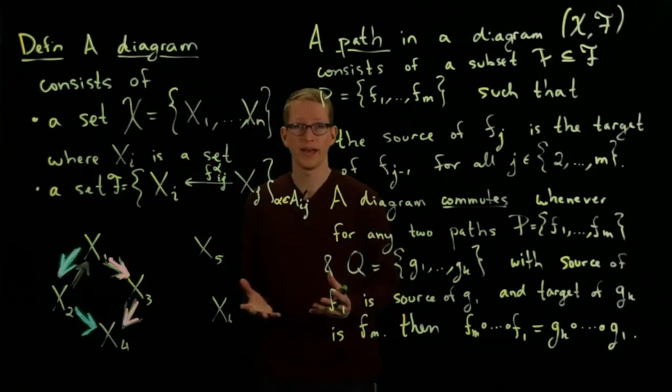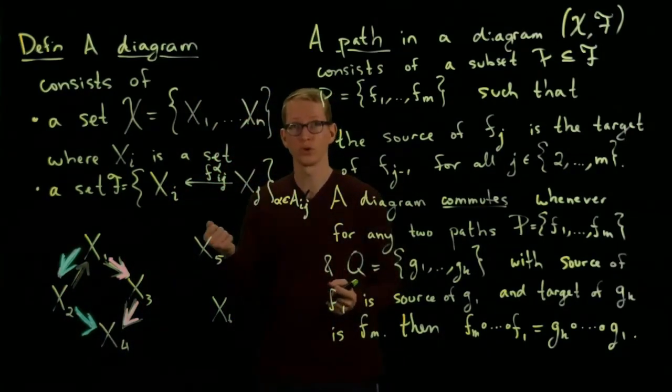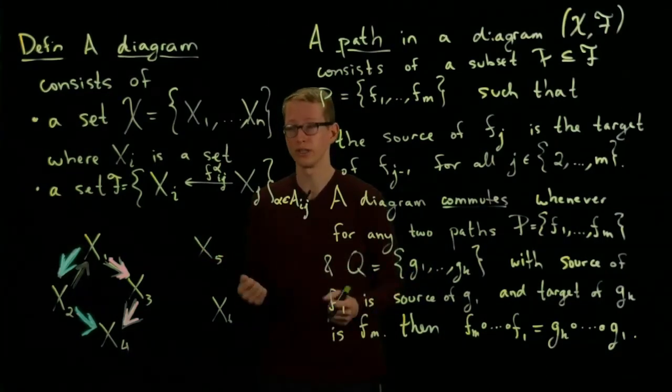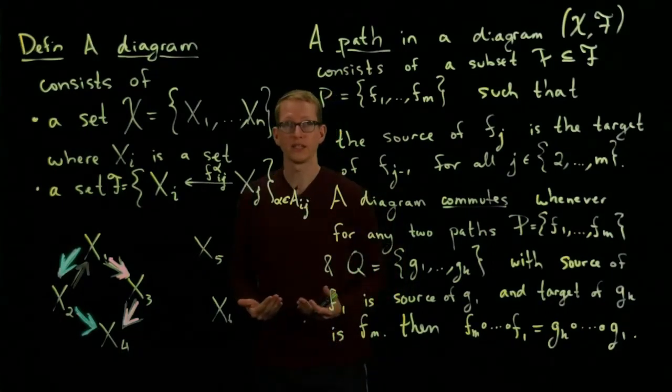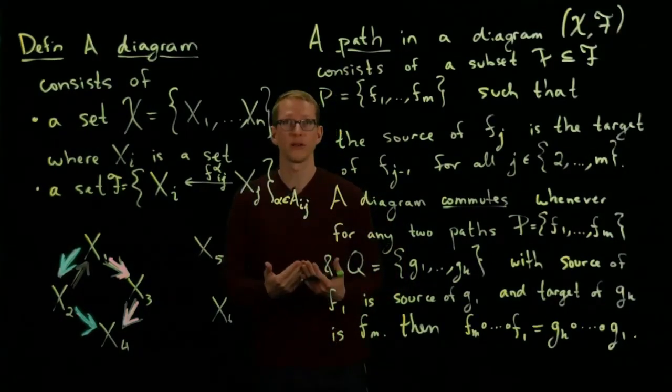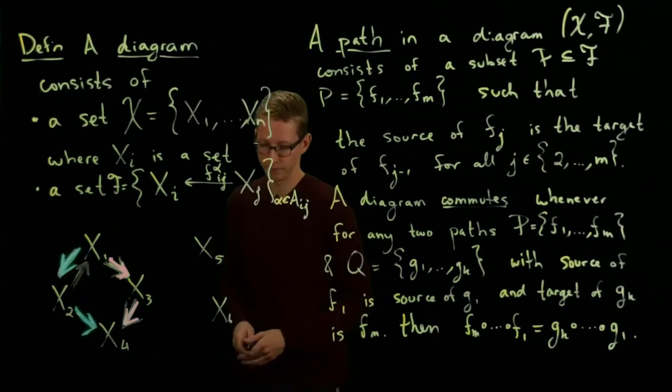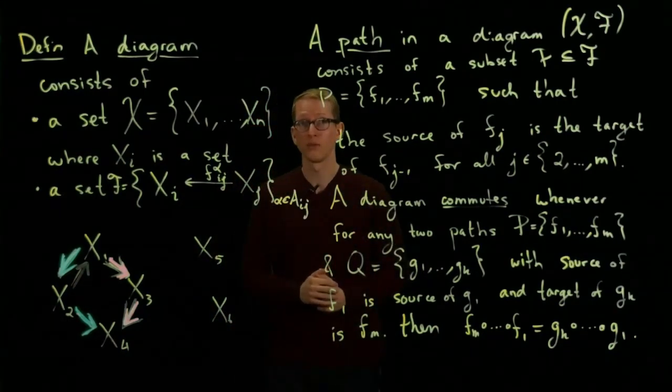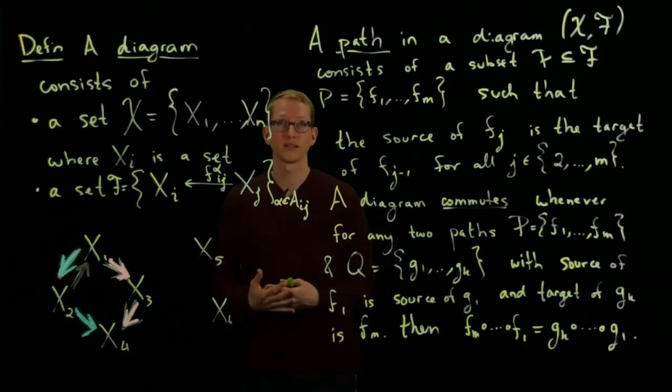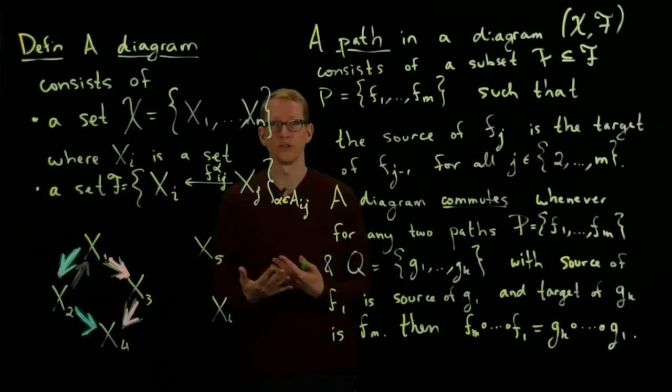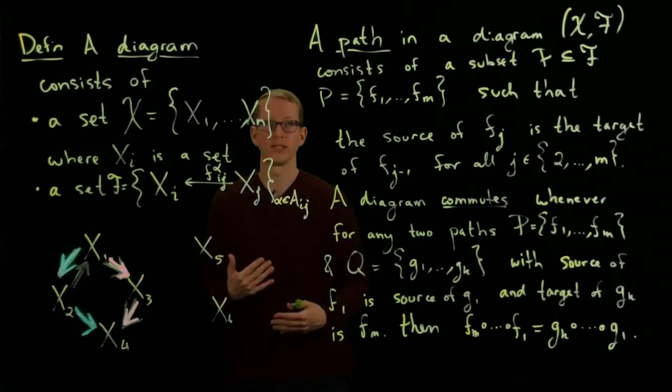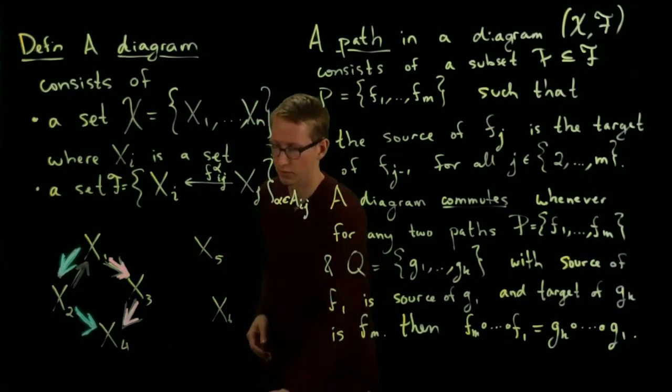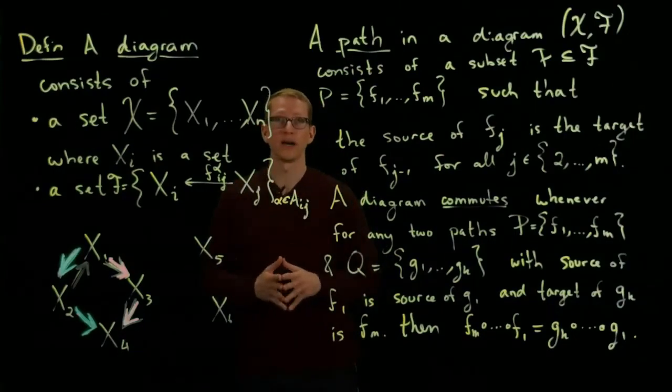So every single path, for every pair of paths where the source and targets match, you have to ask that those two functions, once you compose them, are equal. And when that condition holds, that means you have a diagram that commutes. And we'll see why this is important throughout the entire course. When we talk about the chain rule, when we talk about products and different functions on Euclidean space, it's very important to keep track of when certain diagrams commute. So in the next video, we'll talk about products. We'll see you next time.